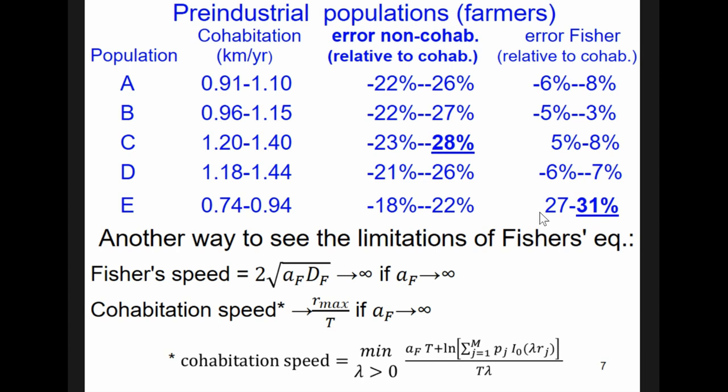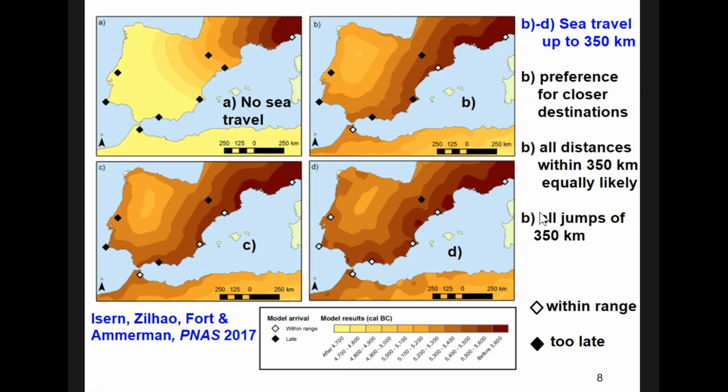Finally, another very simple way to see that Fisher's equation cannot be valid in general is this one. If the reproduction rate becomes very, very large, Fisher's speed becomes very, very large. It increases without any bound. In contrast, the cohabitation speed is bounded. It cannot be larger than the maximum dispersal distance divided by the generation time, which is the result that we expect. So, definitely, it is better to use the cohabitation equation than the non-cohabitation one, and still much better than Fisher's equation.